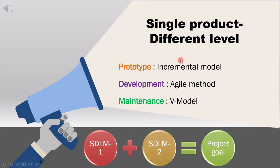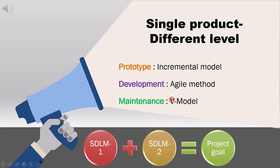Suppose a product is in the prototype state — the initial or starting stage. For this, you can use the incremental model, developing small features little by little over time. But if the product is in the development stage, you want to use the Agile method, which will let you get the product ready to launch into the market as early as possible. But if the product is in the maintenance stage — like when a customer comes back with a defect that you have to correct — then you use the V-model. So we use the incremental model for the prototype stage, the Agile method for the development stage, and V-model for the maintenance stage.